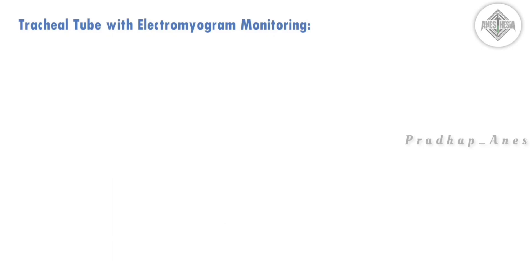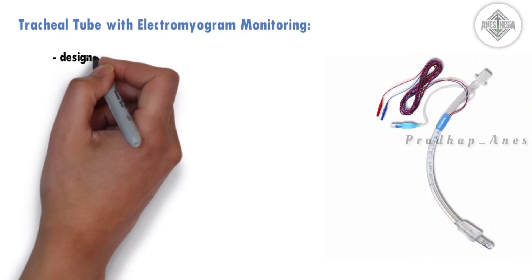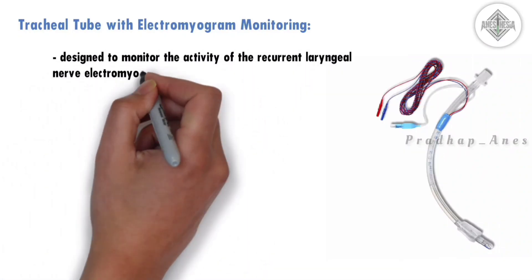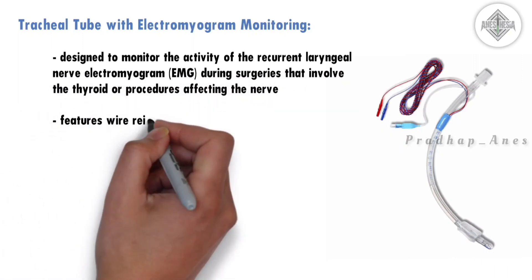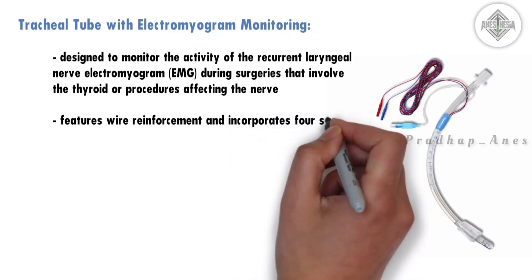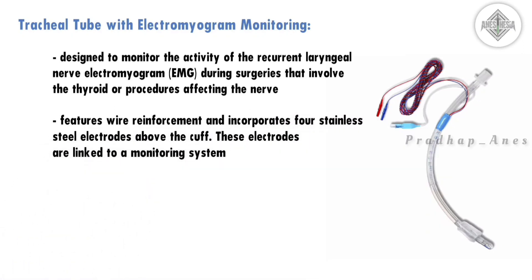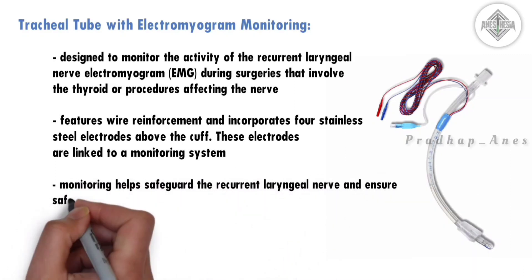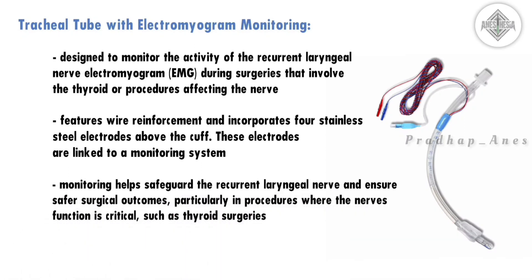Tracheal tubes with electromyogram monitoring are specialized tubes designed to monitor the activity of the recurrent laryngeal nerve during surgeries involving the thyroid or procedures affecting the nerve. They feature wire reinforcement and incorporate four stainless steel electrodes above the cuff, which are linked to a monitoring system. This monitoring helps safeguard the recurrent laryngeal nerve and ensure safer surgical outcomes, particularly in procedures where the nerve's function is critical, such as thyroid surgeries.